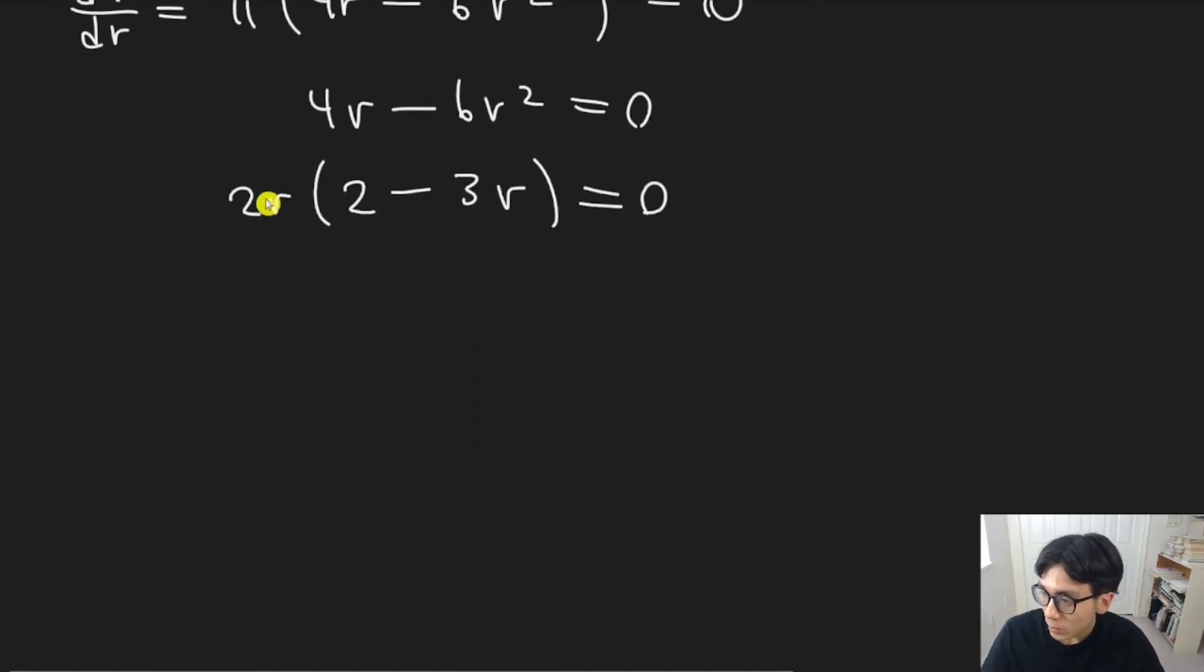Then we need to solve for r. Either this is going to be zero, in which case r equals zero, or this is going to be zero. And if you solve that one, you're going to get r equals two over three. Now, because r is a radius, we can't have r be zero. The radius of zero is clearly not going to be a maximum volume if there's no radius. So we're going to take r equals two thirds as our maximum value.